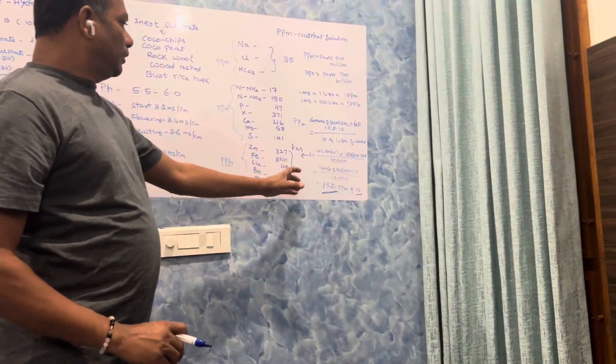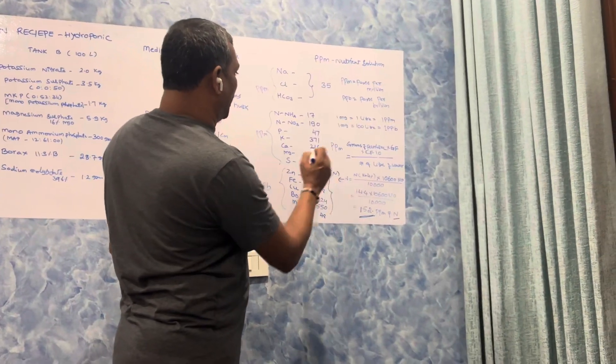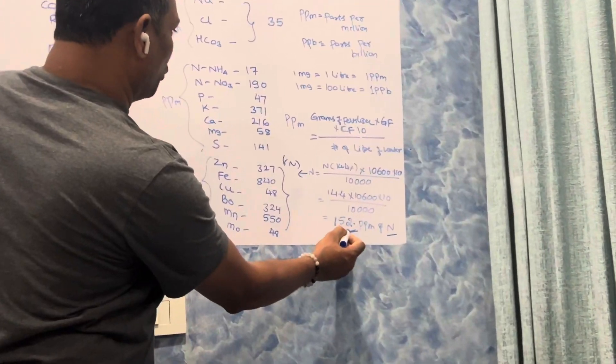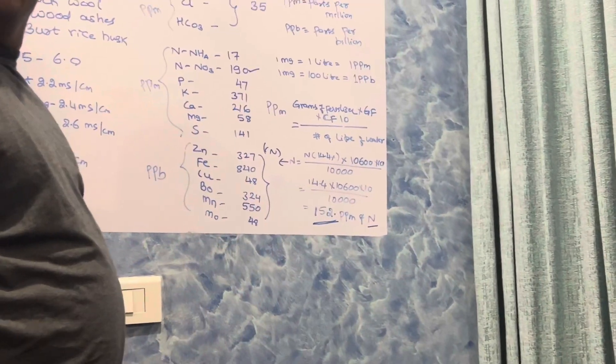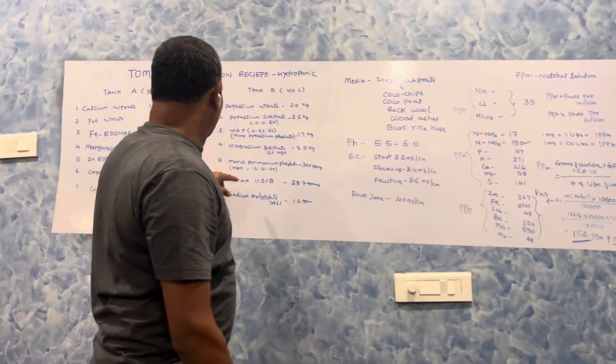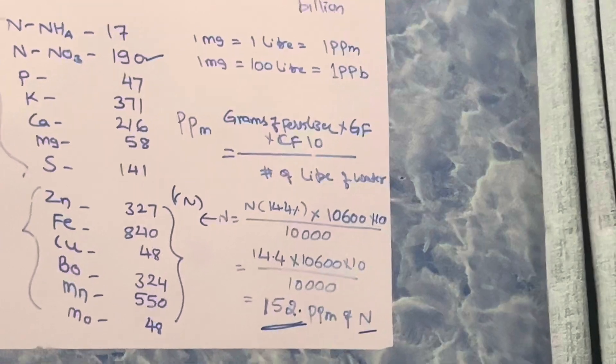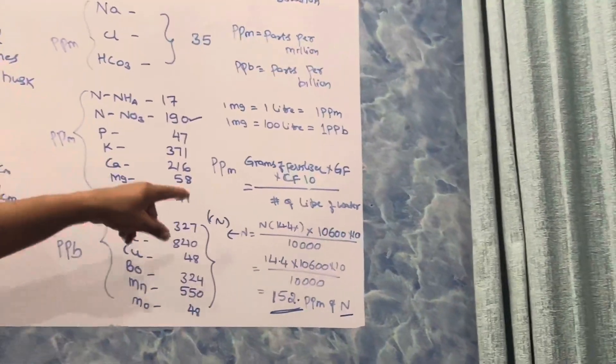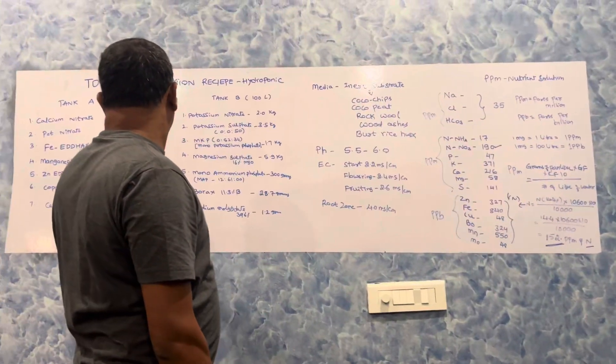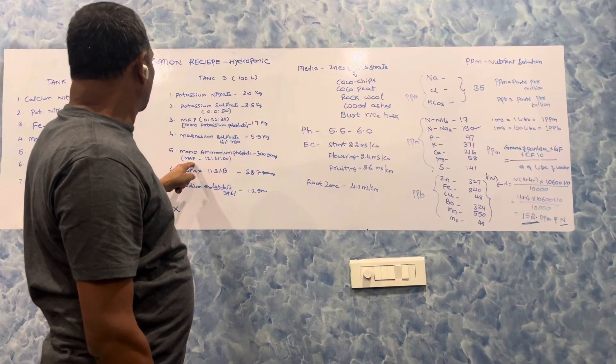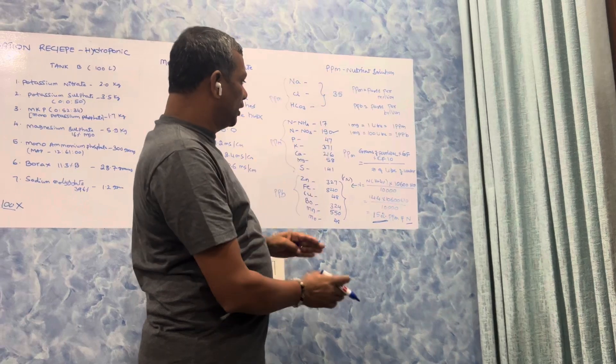If you see here, I calculated only for nitrate nitrogen. Here you see nitrate nitrogen is 190 PPM. There are other sources of nitrogen also. For example, mono ammonium phosphate also has N. Potassium nitrate also has N. N has different sources: calcium nitrate, mono ammonium phosphate, potassium nitrate. Finally, nitrate nitrogen and ammoniacal nitrogen reach this PPM.